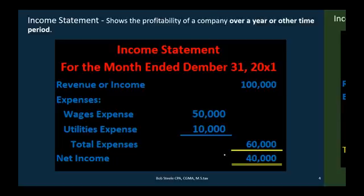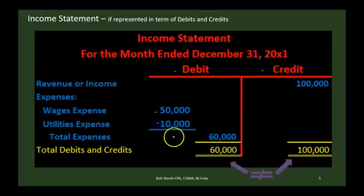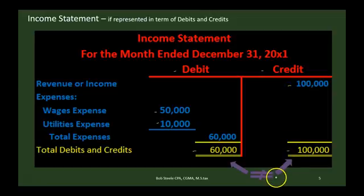If we look at the income statement in terms of debits and credits — debits on the left, credits on the right of the T-account — expenses are going to be debits, adding up to $60,000, and revenues are credits, adding up to $100,000. Note that these two are not equal in this case, whereas on the balance sheet they were equal. The double-entry accounting system means total debits equal total credits overall.